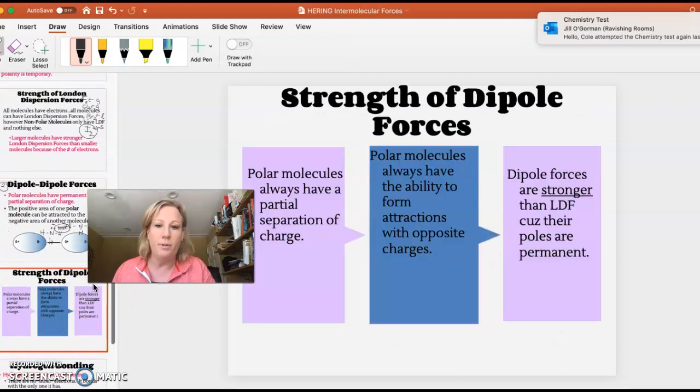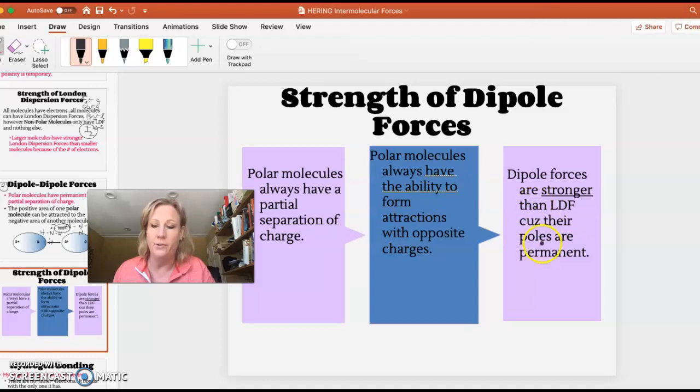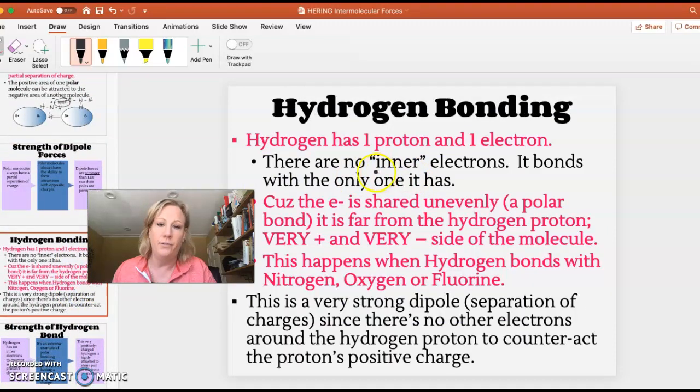Dipole-dipoles are stronger than LDFs because those poles, the negative end of the molecule, the positive end, stay constant. And then hydrogen bonding is just a special case of dipole-dipole. This is the third type of IMF.